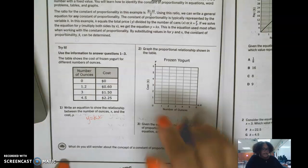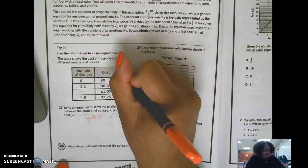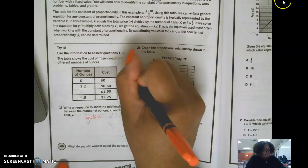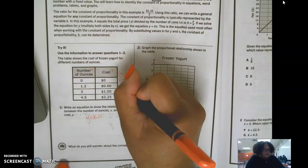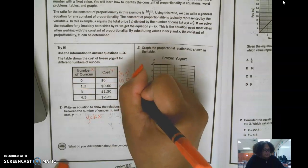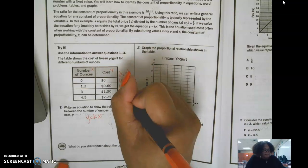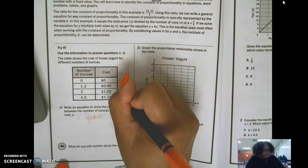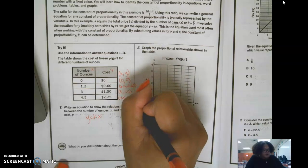I like to take easy numbers to divide by. So here I would do 3 into 1.5 because I only have one decimal to deal with. So write an equation to show the relationship between the number of ounces x and the cost y. So this is my y equals kx. Okay, so I have to find what k is. So this is an x, comma y. y, this is x, this is y. x, 1.2, 60 cents. 3, 1.5, and 4.5, 2.25.